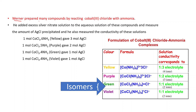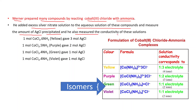Werner prepared many compounds by reacting cobalt(III) chloride with ammonia, and these compounds were distinguished by their colors. He added excess silver nitrate solution to the aqueous solution of these compounds, measured the amount of silver chloride precipitated, and also measured the conductivity of these solutions.